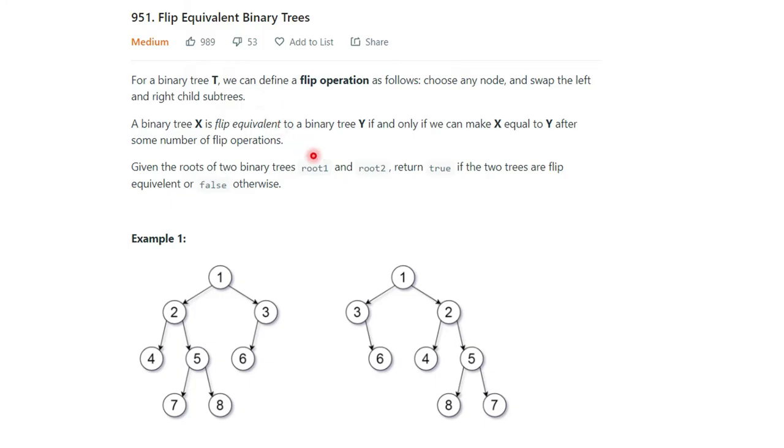The problem statement is saying for a binary tree, we can define a flip operation as follows: choose any node and swap the left and right child subtrees. A binary tree X is flip equivalent to a binary tree Y if and only if we can make X equal to Y after some number of flip operations. Given the roots of two binary trees root1 and root2, return true if the two trees are flip equivalent or false otherwise.